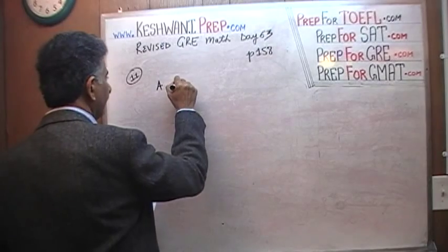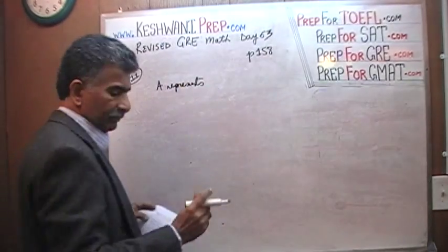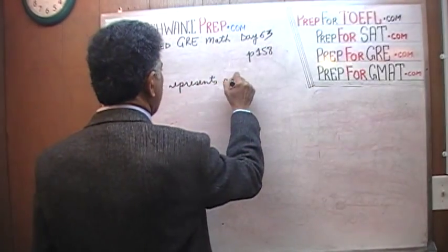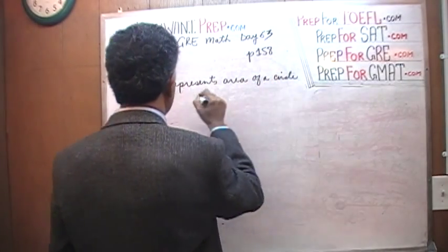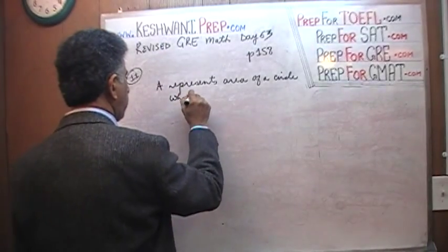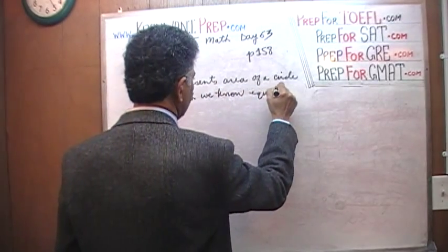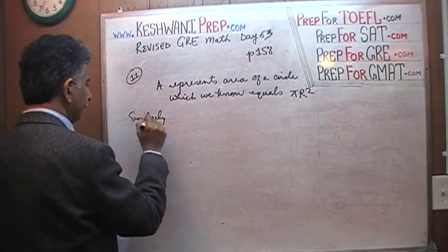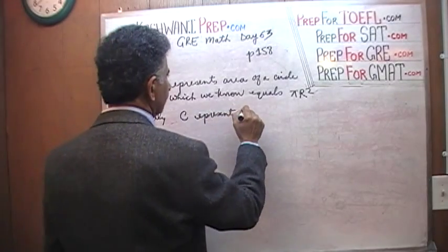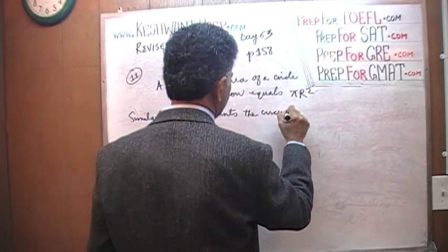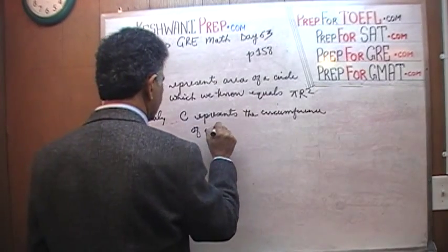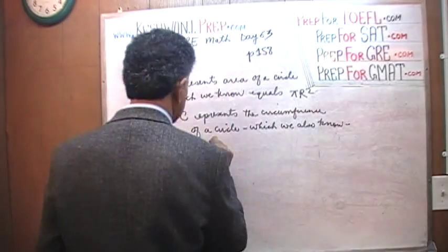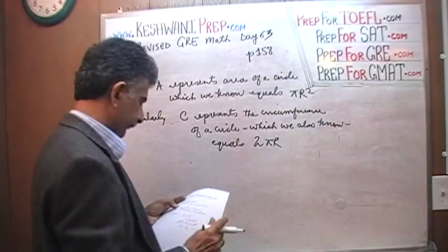A represents the area of a circle, which we know equals pi r squared. Similarly, C represents the circumference of a circle, which we also know equals 2 times pi times r.